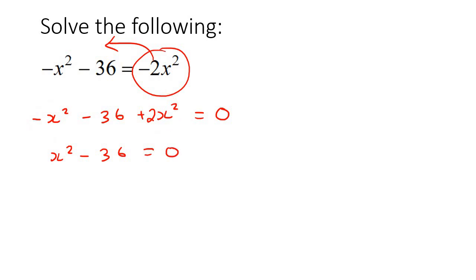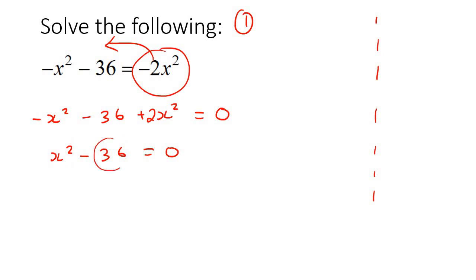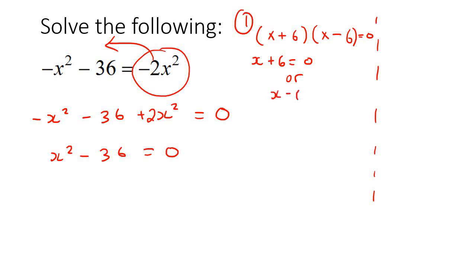At this step, you have options. Option one: you could see this as a difference of squares, because it has two terms, a negative in between them, and each one is a perfect square — x times x gives x squared, and 6 times 6 gives 36. So you factor it as (x plus 6)(x minus 6). Then set each bracket to zero: x plus 6 equals 0, or x minus 6 equals 0, giving x equals negative 6 or x equals 6.